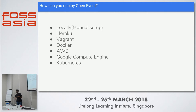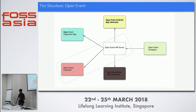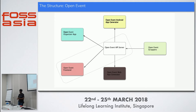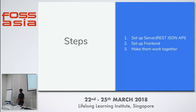In this talk, we'll focus on how to set up Open Event locally to help you begin the development flow and contribute to the project. The structure adopted in GSoC 2017 has an API server in the middle serving multiple services. There are three steps: set up the server, set up the frontend, and make them work together.